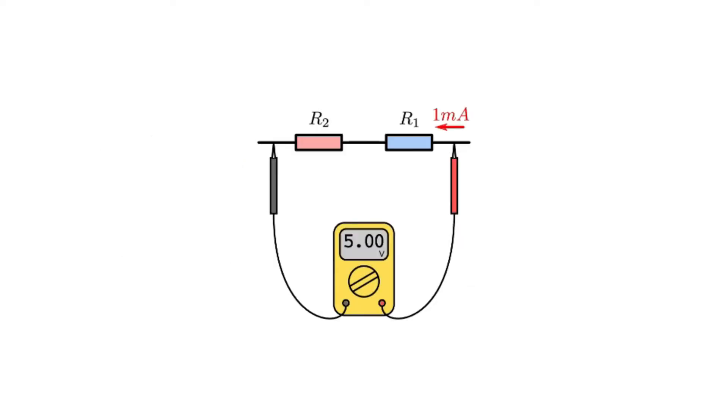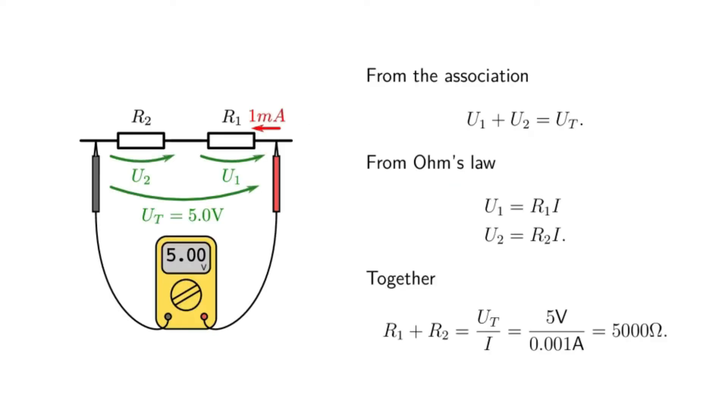What if the situation is a bit more complicated? For example, we may have two resistors connected in series. Let's try to find the values of R1 and R2 based on the measurements taken at the extremities. From the association of resistors, we can clearly see that the sum of the voltage drops across the resistors must be equal to the total voltage drop 5 volts.